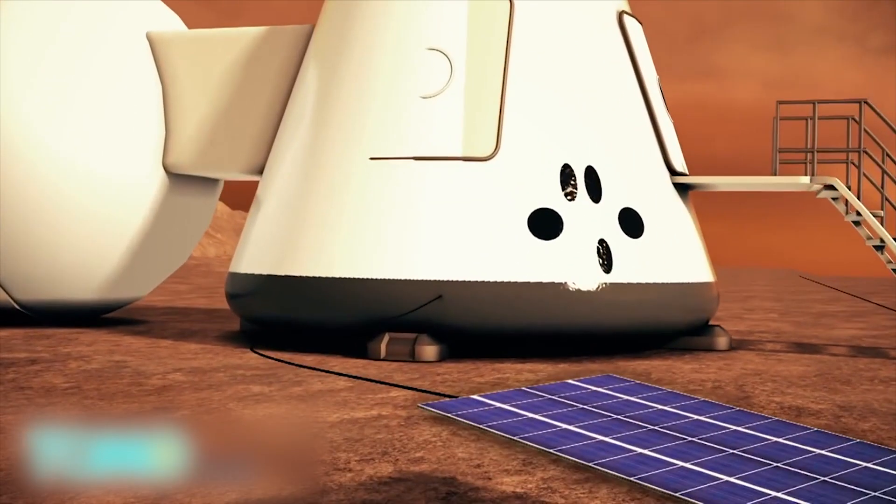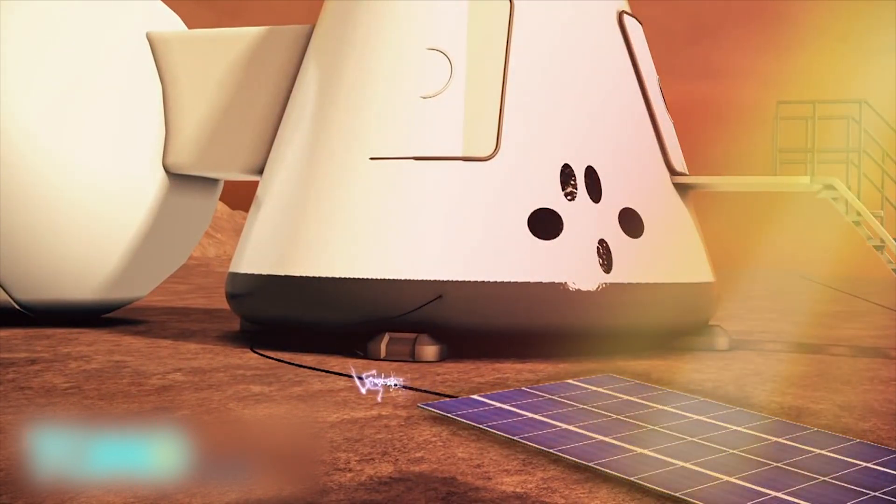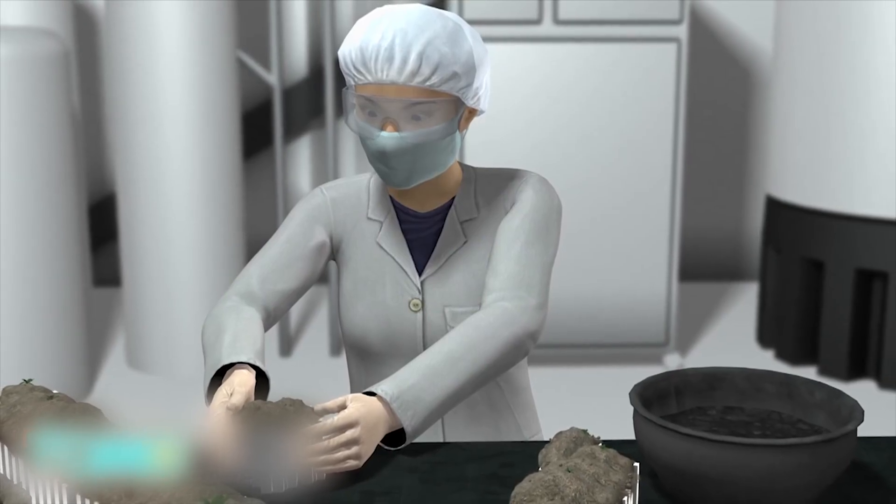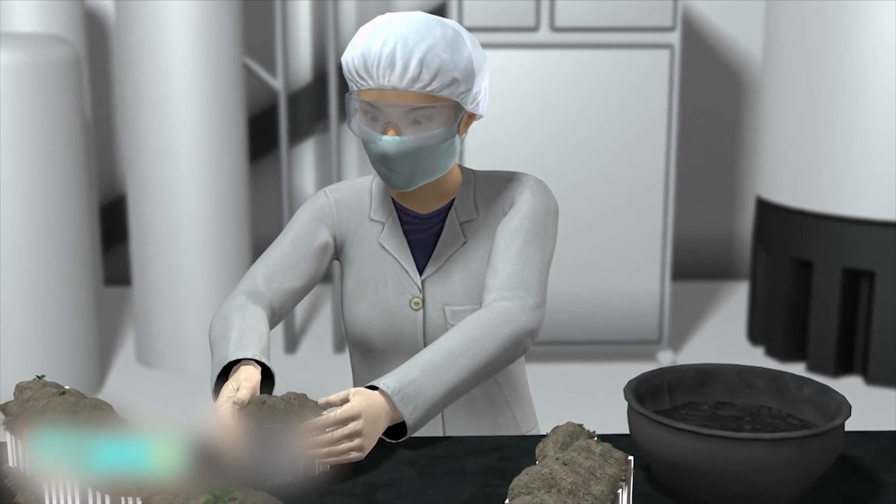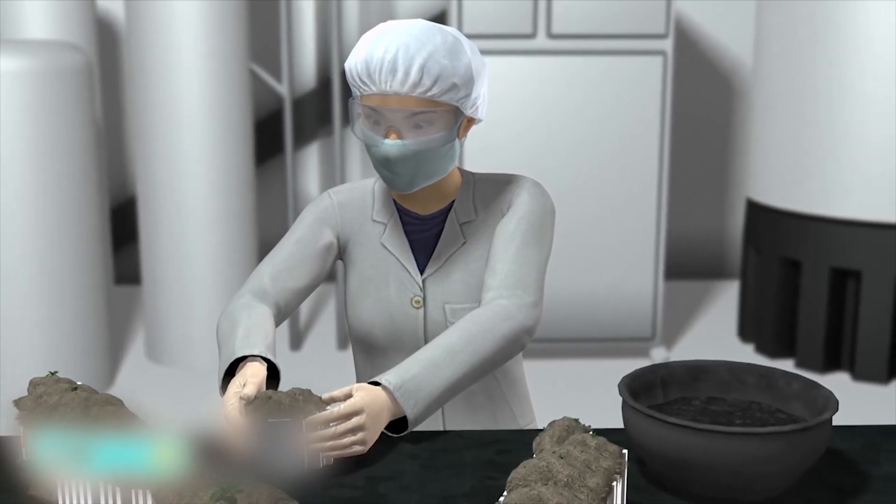Thin, film solar photovoltaic panels will be included to generate electricity. The life support system will be equipped with heating units to boil and extract water from ice in the planet's soil.